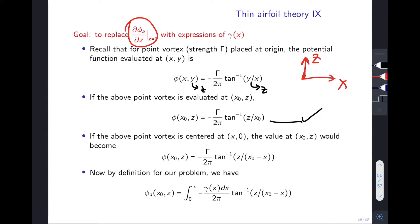Now if the point vortex is not at the origin but shifted to position x, you shift it right or left by that amount. After shifting, the potential at (x_0, z) is found by replacing x_0 in the expression with x_0 - x. This gives the expression for the shifted point vortex evaluated at (x_0, 0).